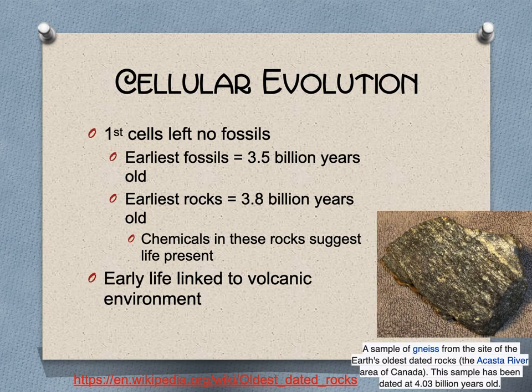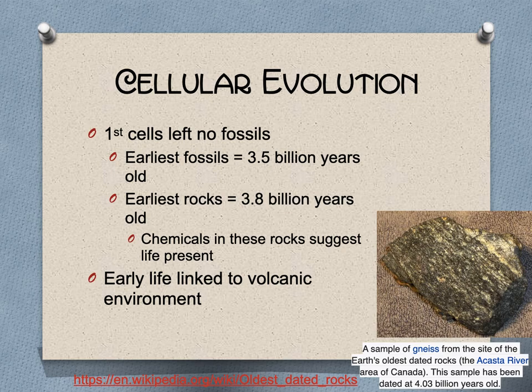The first cells left no fossils. Again, the earliest fossils are about 3.5 billion years old. The earliest rocks we can find are about 3.8 billion years old, and the various chemical signatures in the rock suggest life is present — it's different from what you'd find in rocks without life. Early life was linked to the volcanic environment. The oldest rock is from the Acasta River area of Canada, dated at 4.03 billion years old — rocks were forming 600 million years after Earth itself was considered to have formed.